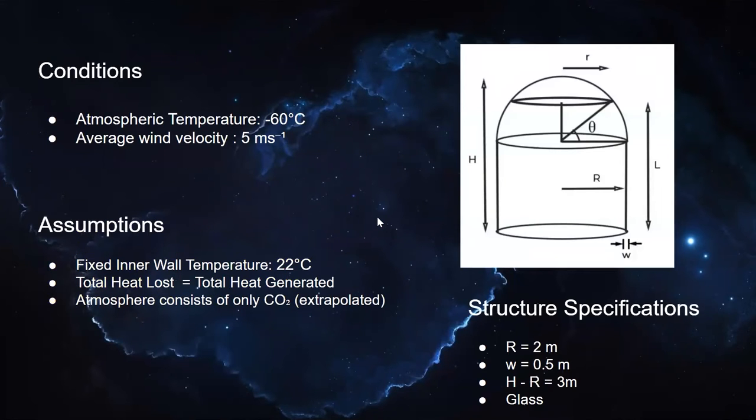The conditions we solved in were, the atmospheric temperature was taken to be negative 60 degree celsius, which was the average temperature throughout the day. The average wind velocity was 5 meter per second.